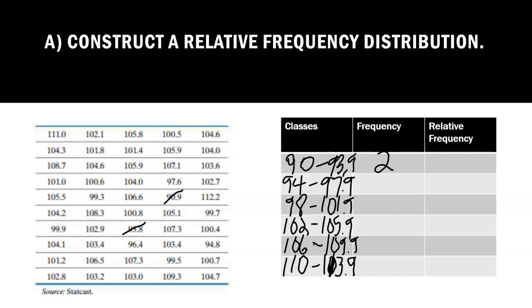Now I want to count the numbers between 94 and 97.9. If I look in the first column, I don't see any. Second column, I don't see any. I see one in the third column, 96.4. Then I see this 97.6, that's two. And then I see this 94.8, that's three. So I see three in this class.